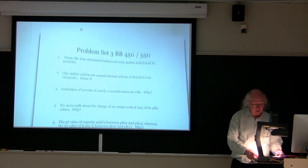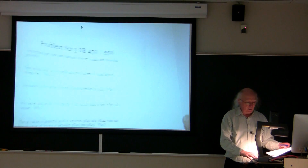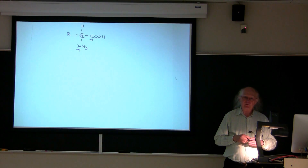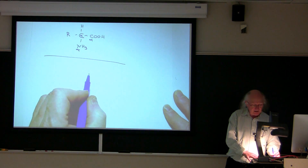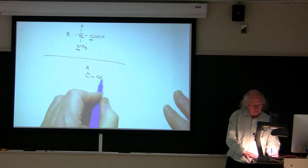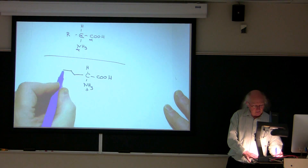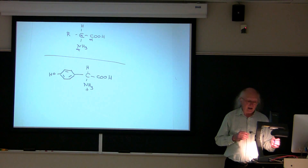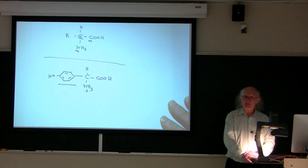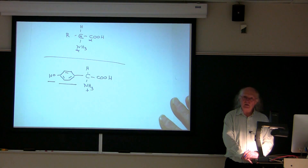The second problem asks which one amino acid in our organizational scheme is listed in two categories. The answer is tyrosine. Tyrosine has a structure with a benzene ring and a hydroxyl group on the end. I put tyrosine into two categories because it is an aromatic amino acid containing a benzene ring, like phenylalanine and tryptophan, and it is also a hydroxyl-containing amino acid, like threonine and serine.